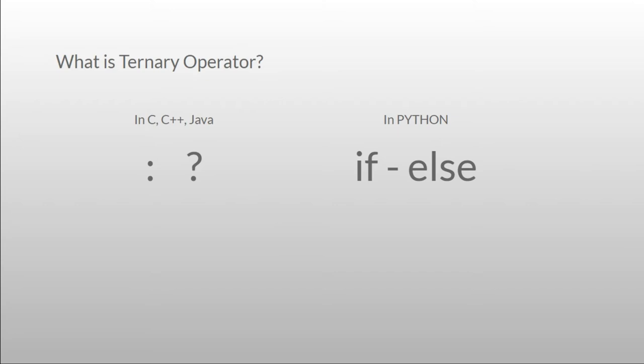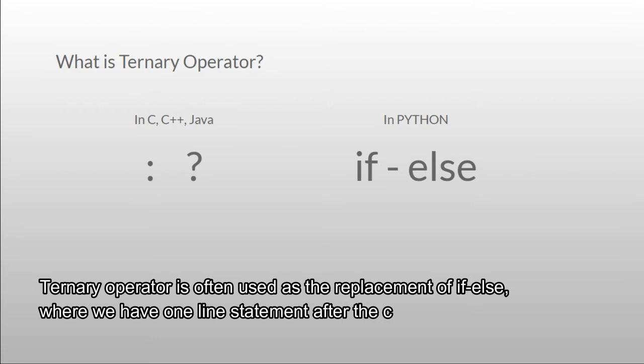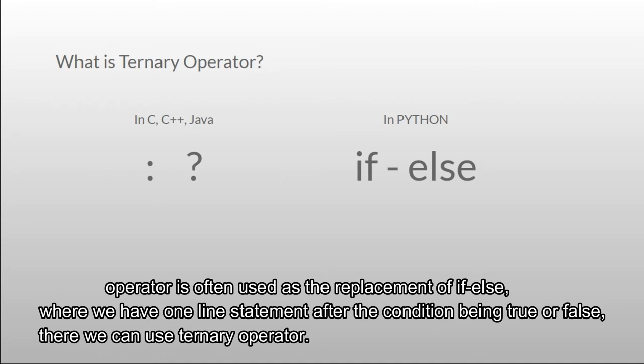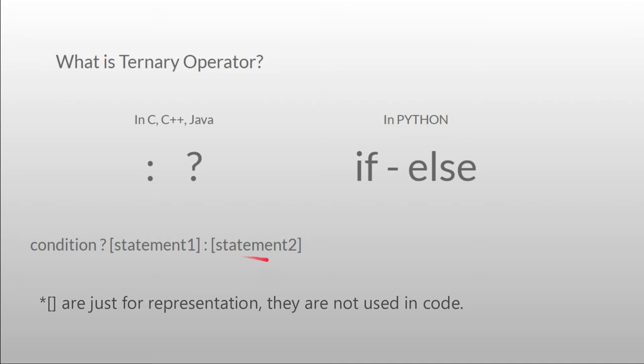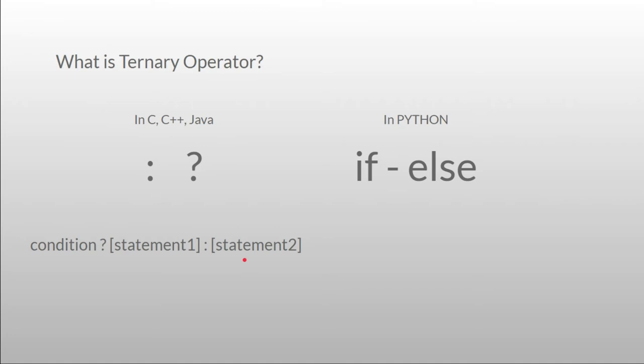The ternary operator is often used as a replacement for if-else where we have a one-line statement after the condition being true or false. The syntax of the ternary operator in other languages is: condition, question mark, statement one, colon, statement two. First the condition is checked — if the condition is true, statement one is executed; if the condition is false, statement two is executed.